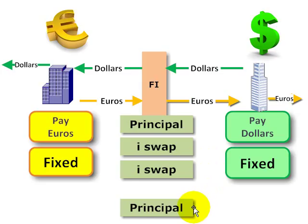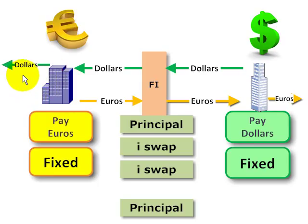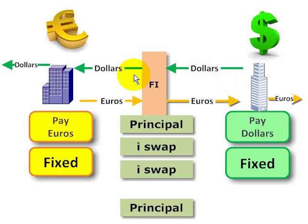At the expiration of the currency swap, the counterparties exchange back the principal. In conducting this fixed-for-fixed currency swap transaction, each counterparty has transformed its obligation. The company that started with a dollar-denominated bond obligation has essentially transformed it into a euro-based obligation, and vice versa, the other counterparty has transformed a euro-denominated obligation into a dollar-denominated one.